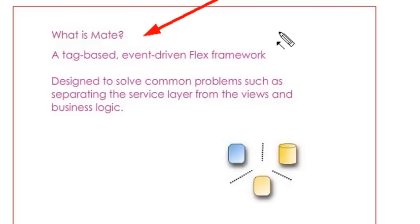And what is MATE? MATE is a tag-based, event-driven flex framework. As opposed to frameworks like Cairngorm or PureMVC, MATE is specifically tailored for Flex, will only work in Flex, and it heavily uses or depends upon the flex tag system.